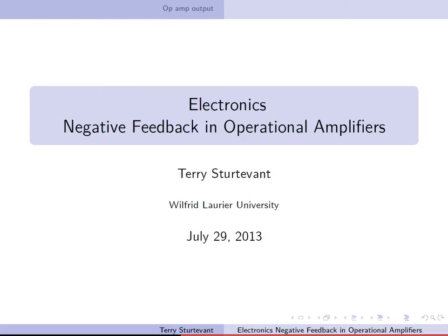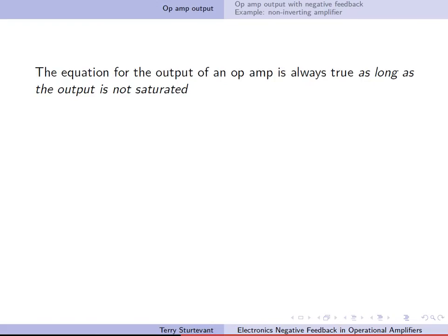This video is about negative feedback in operational amplifier circuits. The equation for the output of an op amp is always true as long as the output is not saturated. Remember, the op amp has two inputs and an output, and the output is proportional to the difference between the non-inverting input and the inverting input.